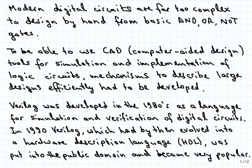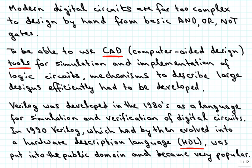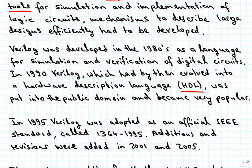Modern digital circuits are too complex to design by hand from basic AND, OR and NOT gates. To be able to use computer-aided design or CAD tools for simulation and implementation of logic circuits, some mechanism to describe large designs efficiently had to be developed. Verilog was developed in the 1980s as a language for simulation and verification of digital circuits. It later evolved into a hardware description language, HDL. The language was put into public domain in part because at the same time there was another language, VHDL, that was an open language that competed with Verilog. The founders of Verilog were afraid that they would lose ground if they wouldn't put it into the open domain.